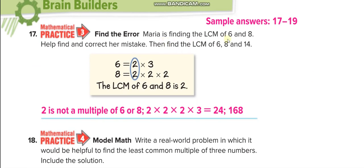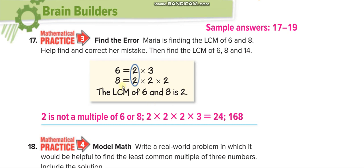Marina is finding the LCM of 6 and 8 — help find and correct her mistake. The prime factorization of 6 is 2 × 3 and 8 is 2 × 2 × 2. The common factor is 2. Write it once, then write the remaining numbers: 3 and 2 × 2. Multiply: 2 × 3 × 2 × 2 = 24.